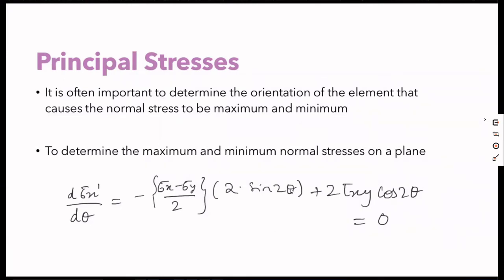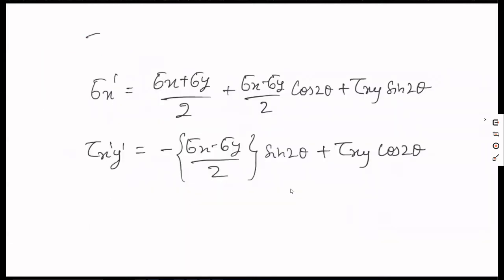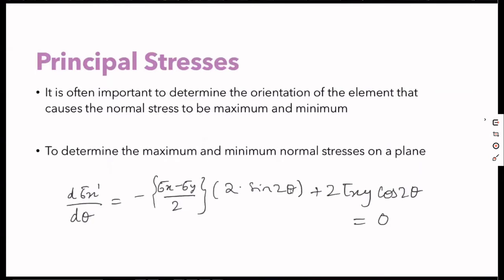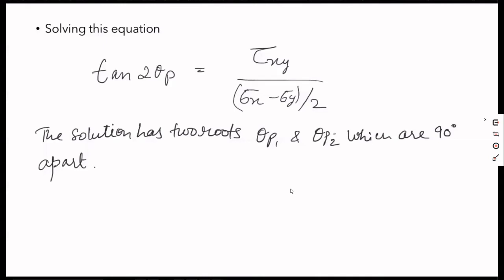To determine the maximum and minimum normal stress on a plane, we differentiate the normal stress expression and set it equal to zero with respect to theta. This is our equation for sigma x-dash. We differentiate sigma x-dash with respect to theta, equate to zero, and after solving we get tan(2θP) = τxy / ((σx − σy) / 2).